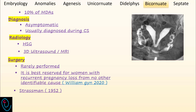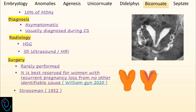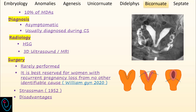Strassman in 1952 described a surgical technique that unified equal-sized endometrial cavities by making an incision in the intervening uterine wall, re-approximating the posterior uterine wall, followed by re-approximation of the anterior uterine wall. This operation has two main disadvantages: postoperative pelvic adhesions, and it also requires cesarean section in subsequent pregnancies to prevent uterine rupture.